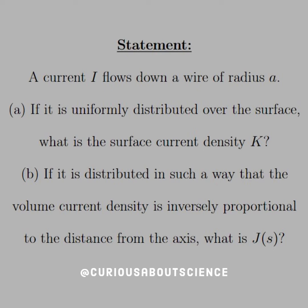Part A: If it is uniformly distributed over the surface, what is the surface current density K? Part B: If it is distributed in such a way that the volume current density is inversely proportional to the distance from the axis, what is J(s), the volume current density?